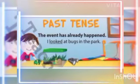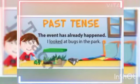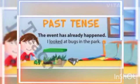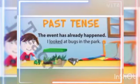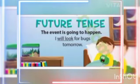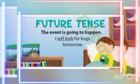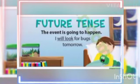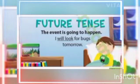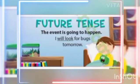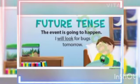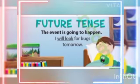Past tense talks about the event that has already happened. The time has already gone when you did the action. The example is: I looked at the bugs in the park. At that time, you were looking at the bugs — it was happening then and there only, that was the present tense. Now, when the time has gone and you are talking about that event, then it becomes the past tense.